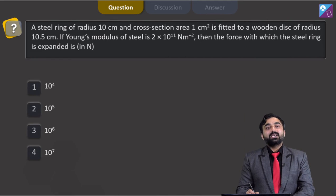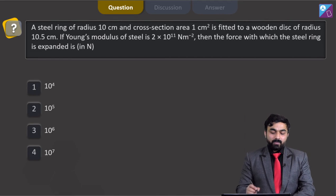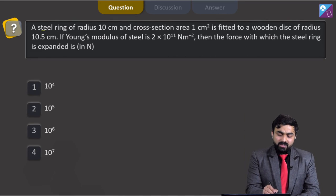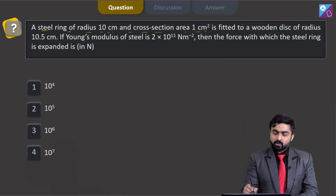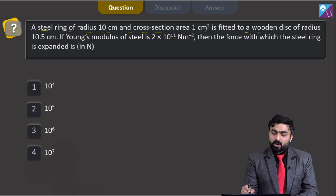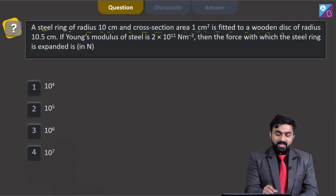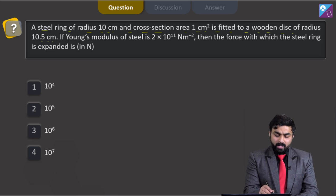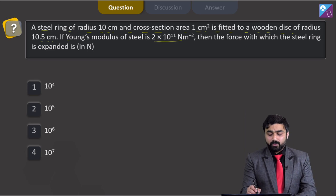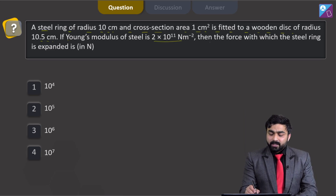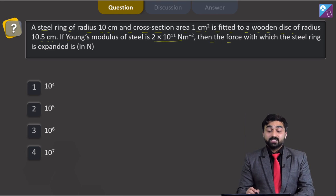Hello dear students, let's check out this particular question. In this question, a steel ring of radius 10 centimeter and cross section area 1 centimeter square is fitted to a wooden disc of radius 10.5 centimeter. If Young's modulus of steel is 2 into 10 to power 11 Newton per meter square, then the force with which the steel ring is expanded is.